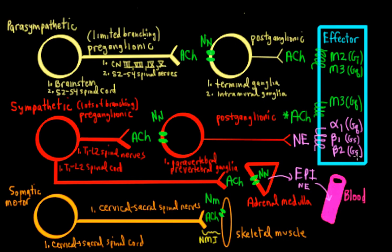There is something special to consider for the sympathetic system: some postganglionic neurons can release acetylcholine, and in that case it binds to a muscarinic 3 receptor, just like acetylcholine in the parasympathetic division can bind to an M3 receptor. This occurs specifically on sweat glands — so when the sympathetic response causes an increase in sweating, the postganglionic neurotransmitter released is acetylcholine acting on the M3 receptor.